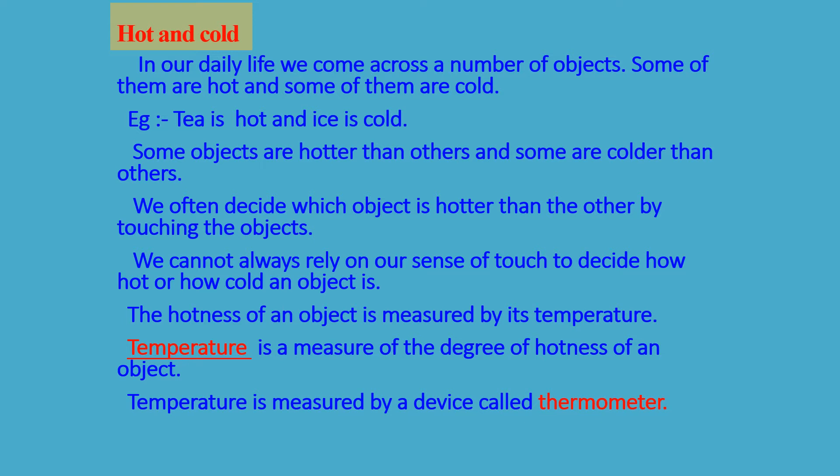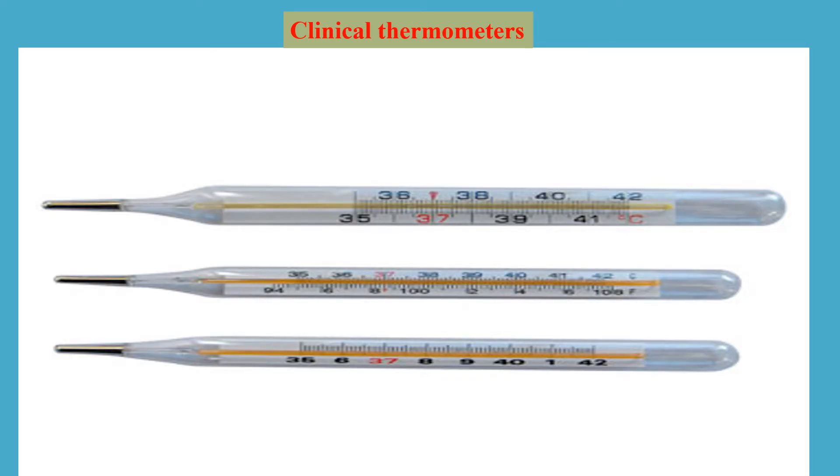We cannot always rely on the sense of touch to decide how hot or cold an object is — it may injure our hands. The hotness of an object is measured by its temperature. Temperature is defined as the measure of degree of hotness of an object, and temperature is measured by a device called a thermometer. Let us look at the variety of thermometers available.